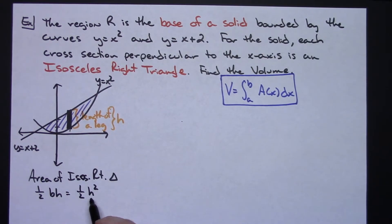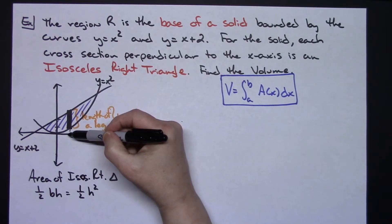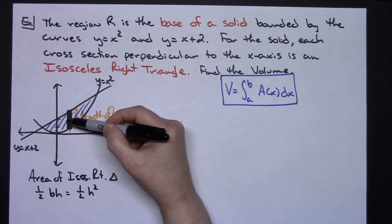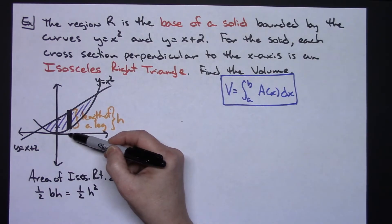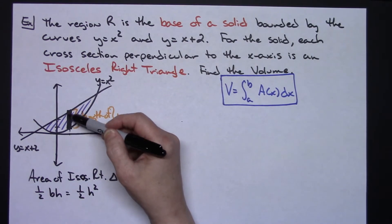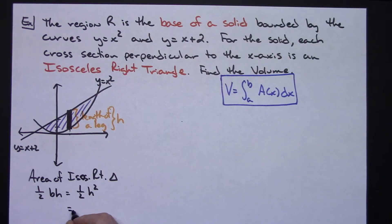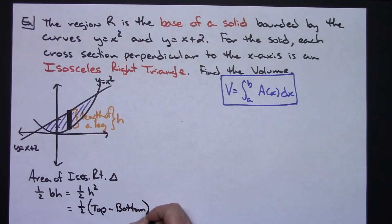This h distance is the length of one of those legs. I can find this h by subtracting the top curve minus the bottom curve — if I pick a random x value and plug it into the top curve that gives me the full distance, and subtracting the bottom curve gives me that gap. So the area becomes one half times (top curve minus bottom curve) quantity squared.